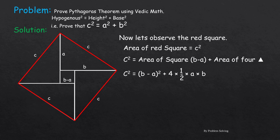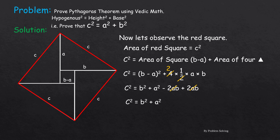So we have c² = (b − a)² + 4 × (a × b / 2). The four and two cancel, leaving two, so c² = b² + a² − 2ab + 2ab. The 2ab terms cancel, and we get c² = b² + a². That's the proof of the Pythagorean theorem.